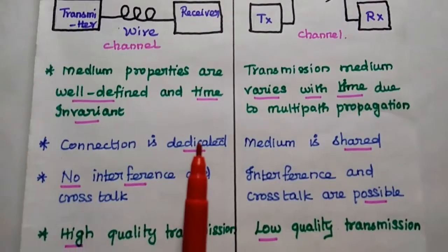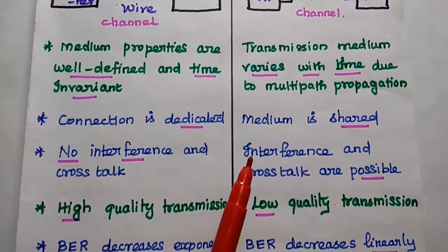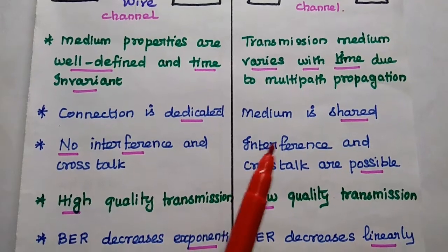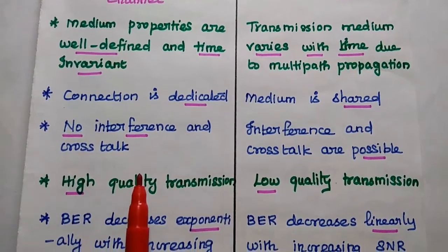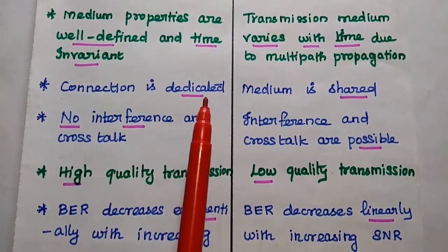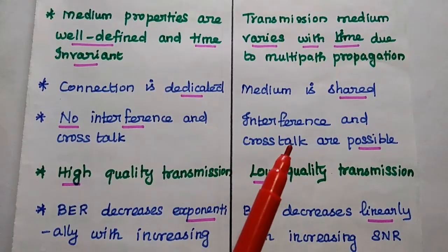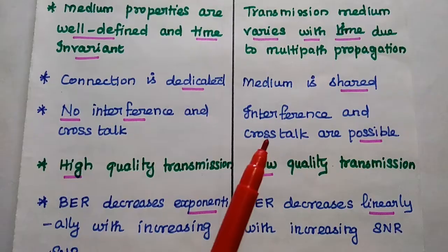In wired communication, the connection is dedicated. In wireless, the channel is shared among multiple users. In wired communication, there is no interference and crosstalk because of this dedicated connection. But in wireless communication, the interference and crosstalk are possible.